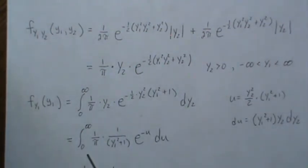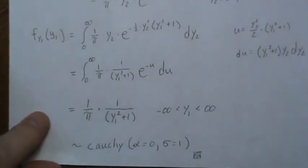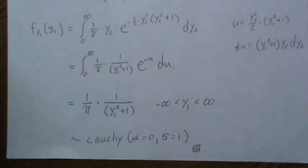This just becomes e to the minus u evaluated at infinity and zero, and we're left with the same thing, which is a Cauchy alpha zero and sigma equal one.